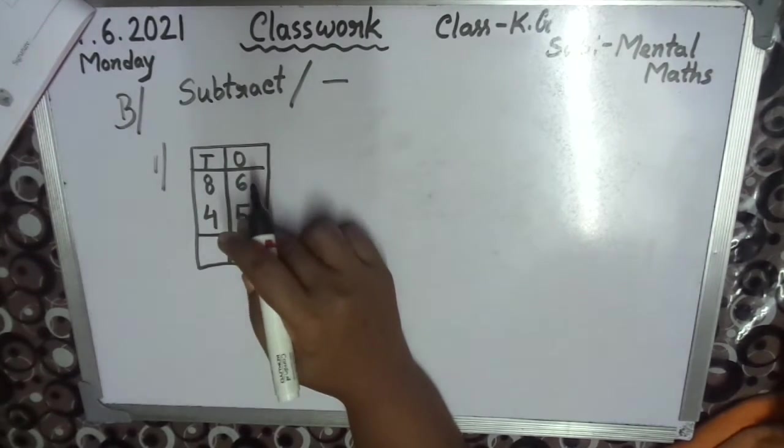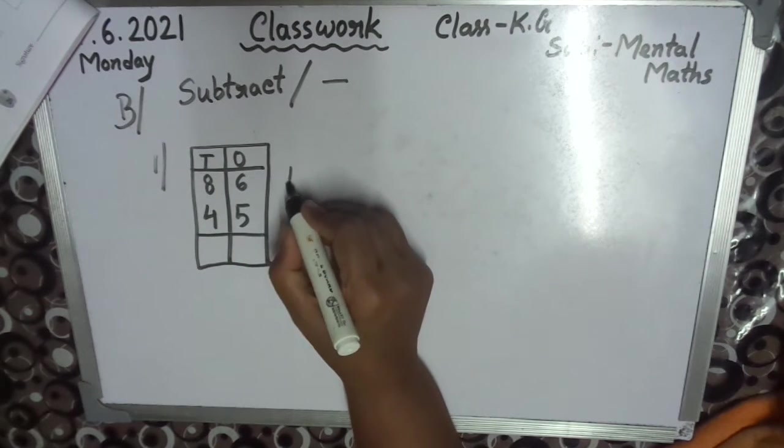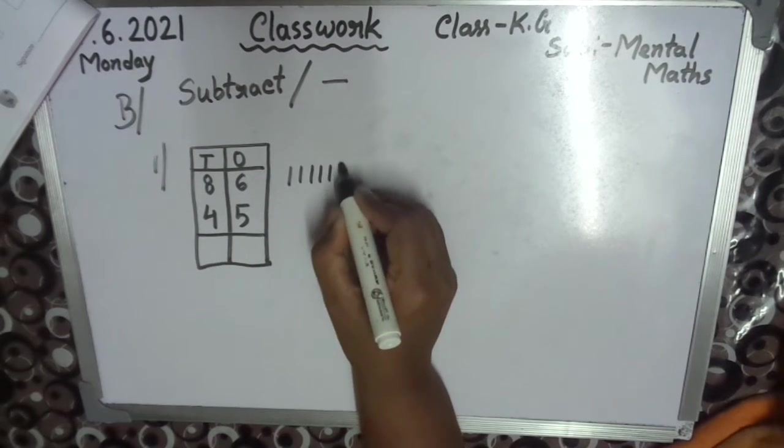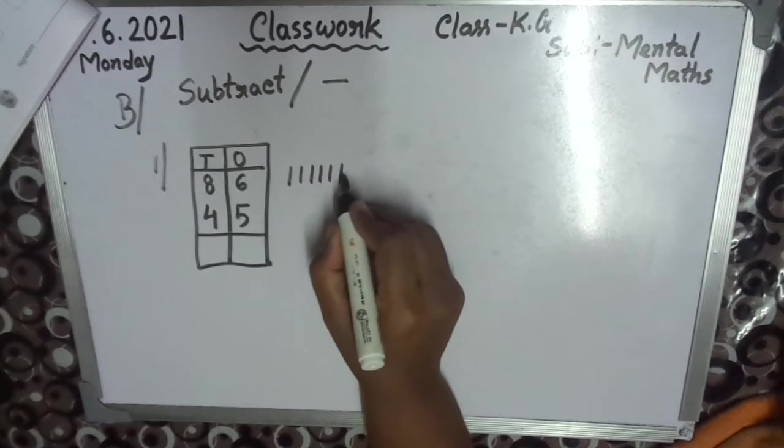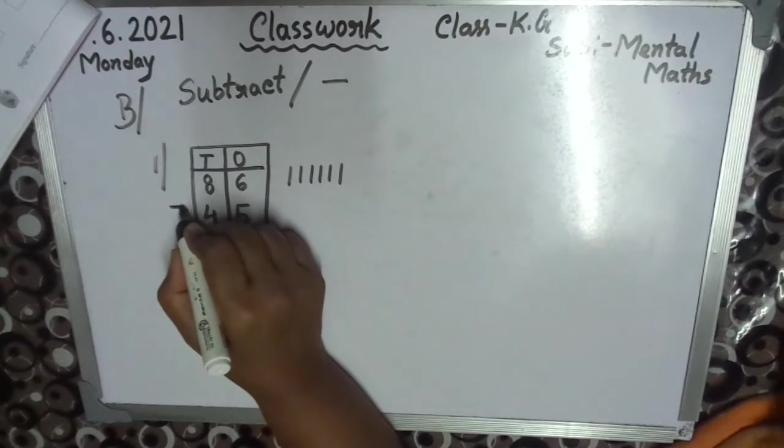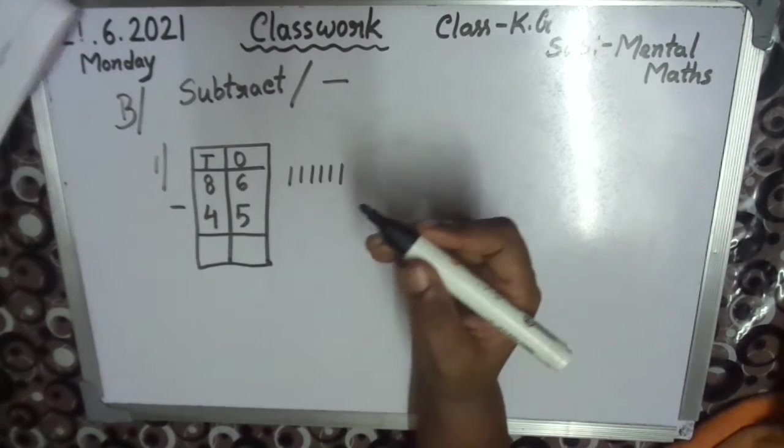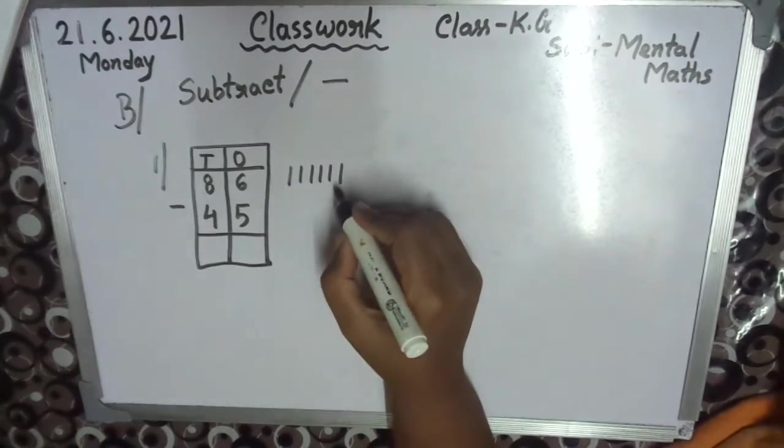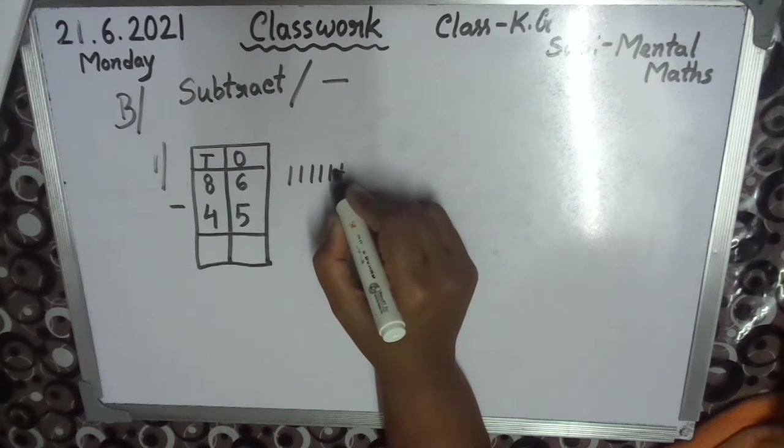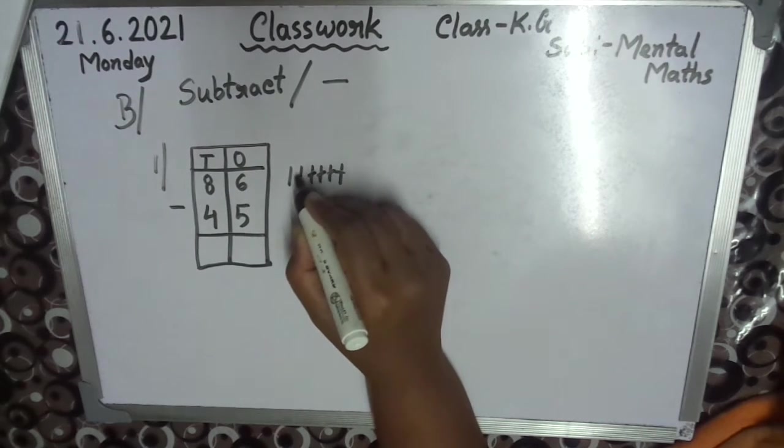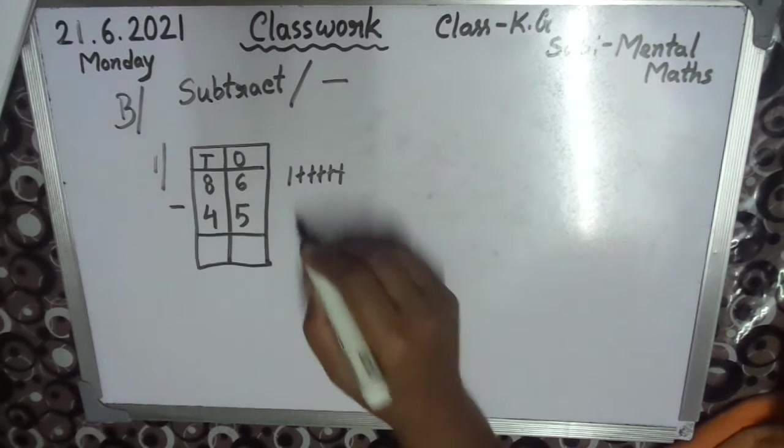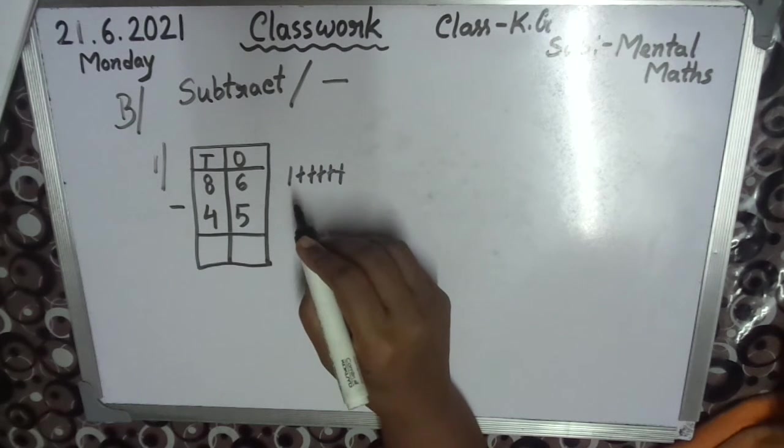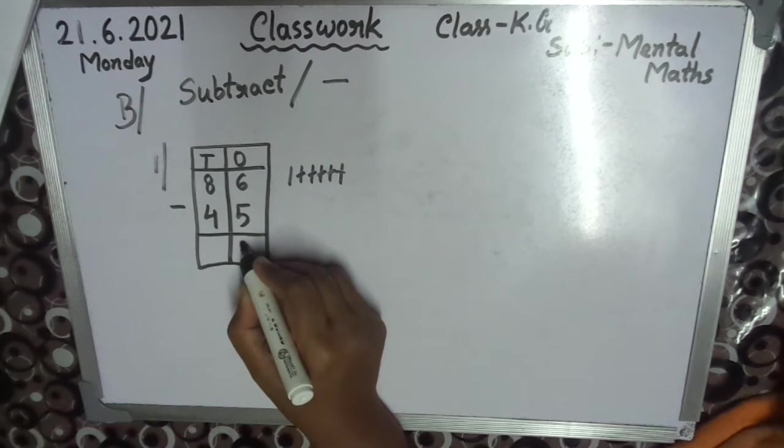6 is big number then 5. So 1, 2, 3, 4, 5, 6. 5, sign is less, means minus sign. Subtract. So 5: 1, 2, 3, 4, 5, take away. So 1 left. So answer is 1.